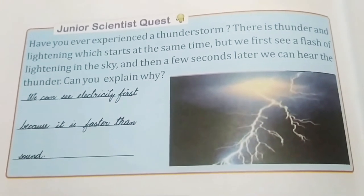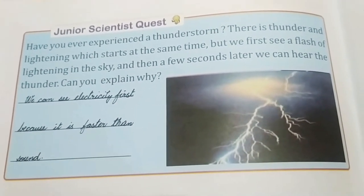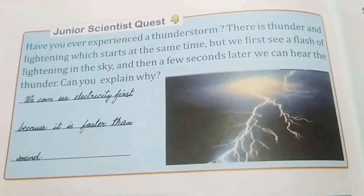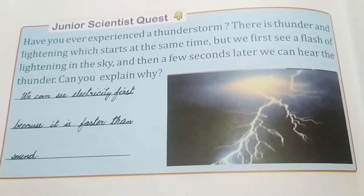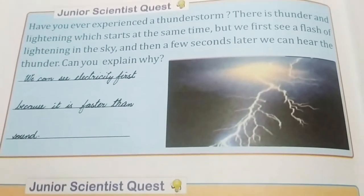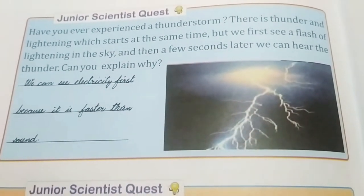At page number 66, Junior Scientist Quest asks: have you ever experienced a thunderstorm? There is thunder and lightning which start at the same time, but we first see a flash. Can you explain why? We see lightning first because light is faster than sound.